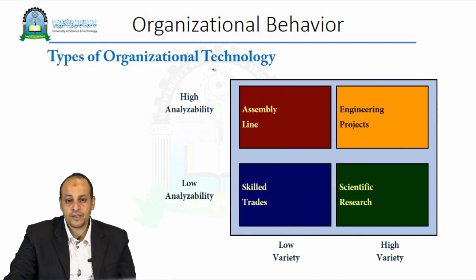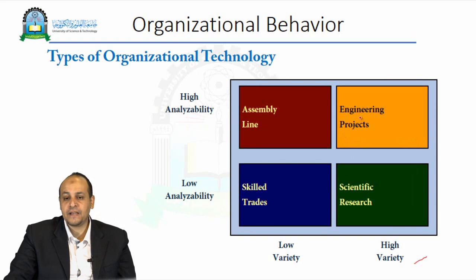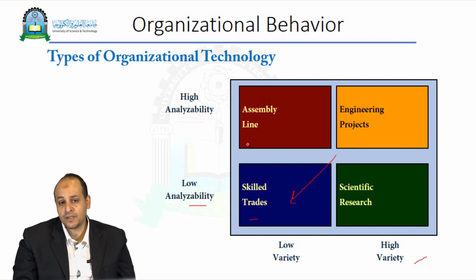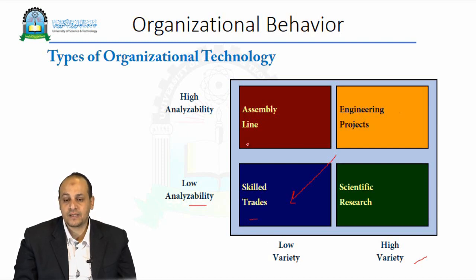The types of organization technology relate to analyzability and variety. High variety and high analyzability would be an engineering project, requiring very specific specialties. Low analyzability and low variety would be skilled trades. This varies according to the type of technology needed and the kind of expertise. Organizations sometimes develop their structure based on the nature of the business itself — the nature of the business, the capability of the firm, and the availability of skilled staff are all factors that allow the company to choose the best type of structure.